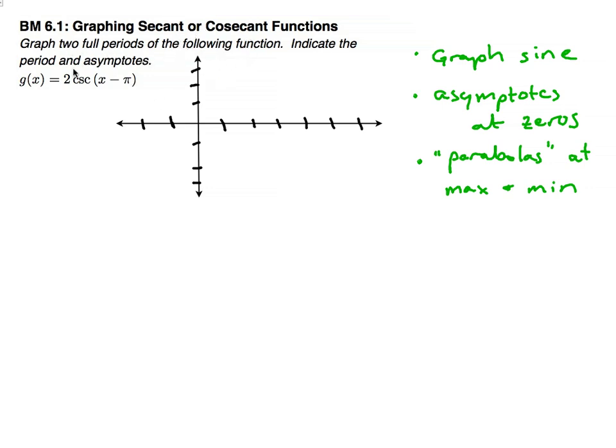We need to graph two full periods and indicate any asymptotes and the period. To graph both the secant or the cosecant, remember it's the reciprocal of sine and cosine. So what we're actually going to do is graph the sine, in this case, as that's the reciprocal of cosecant. Anywhere where you have a zero on the x-axis for sine, when I do the reciprocal of that, that makes it undefined. So I'll have an asymptote. So I'm going to graph the sine function. At any zeros, I'll put an asymptote and then form my graph of the secant or cosecant at the maximum and minimums.